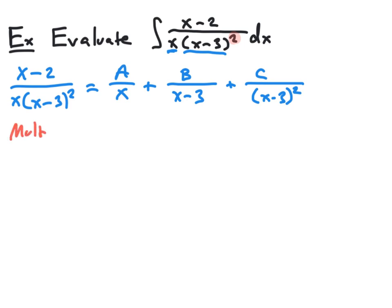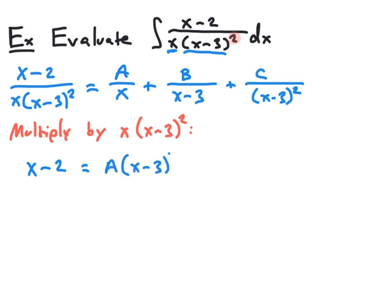Our first step will be to multiply through by our original denominator, x times x minus 3 squared. On the left-hand side, we have just the numerator remaining: x minus 2. In the first term, multiplying a over x by x times x minus 3 squared, the x's cancel and we get a times x minus 3 quantity squared. Multiplying b over x minus 3 by this quantity, the x minus 3 in the denominator cancels with one factor, giving us b times x times x minus 3. In the third term, the x minus 3 squared cancels completely and we're just left with c times x.